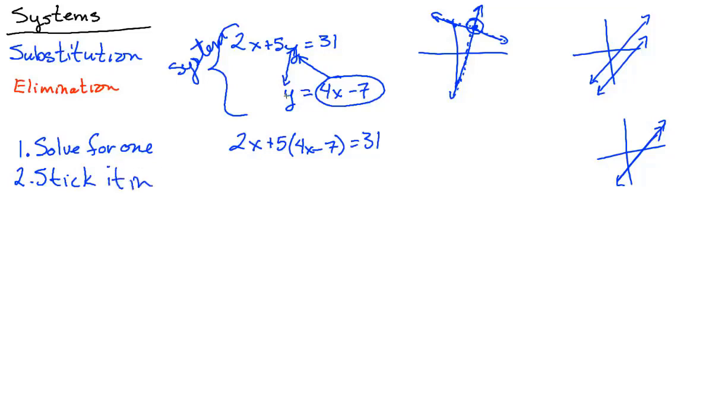Okay, so solve for one of them, the y, and then stick in what that y is right over there. Then you have an equation that you can now solve. 2x plus, let's get rid of the parentheses, 20x minus 35 equals 31. That's 22x equals, add 35 over there and we get 66. x equals 3.